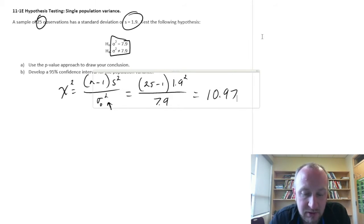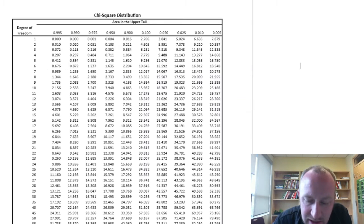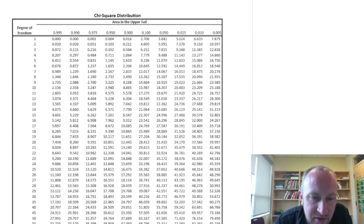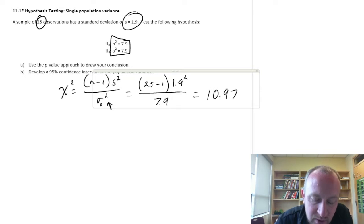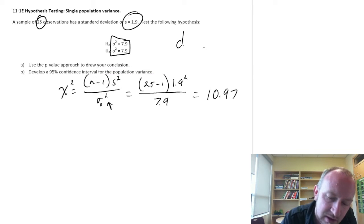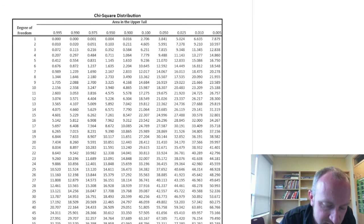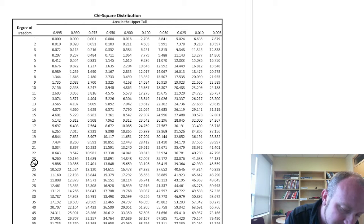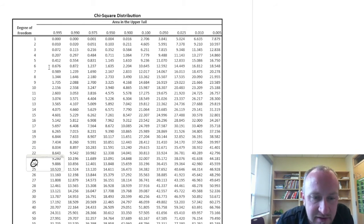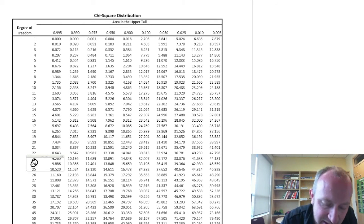Now let's go to our tables and we'll get our p-value, a p-value for this test. So 10.97. We have 24 degrees of freedom, right? Degrees of freedom is 25 minus 1. So we have 24 degrees of freedom.